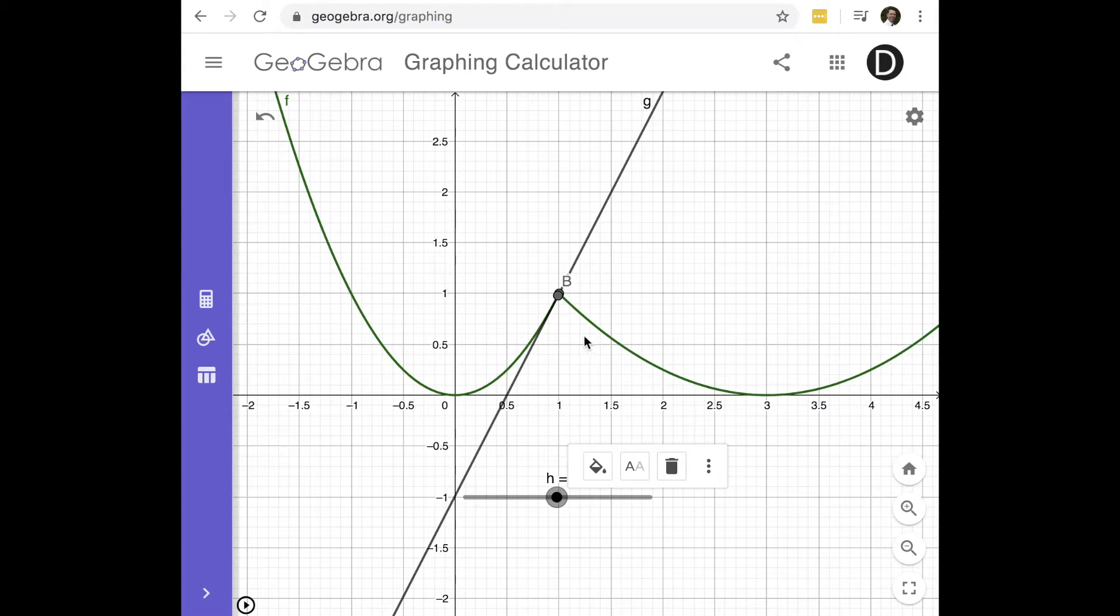And so I get different tangent lines coming from the left and from the right. This is one of the ways to say it's not differentiable. If the derivative from the left and the derivative from the right give different values.